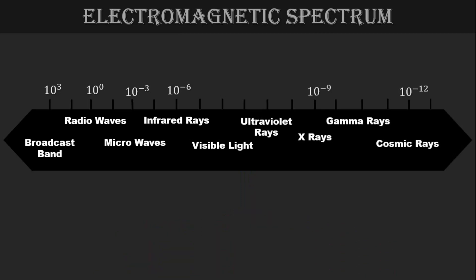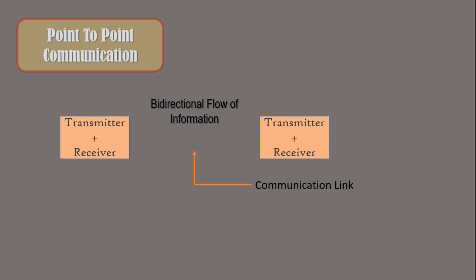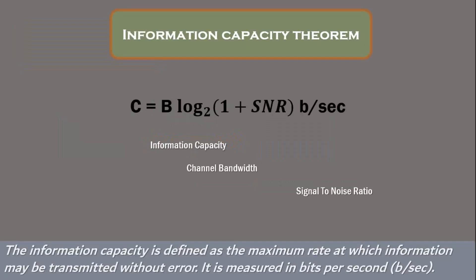Now, in case of point-to-point communication the flow of information is bi-directional. So, with these two modes of communication we actually transmit information.